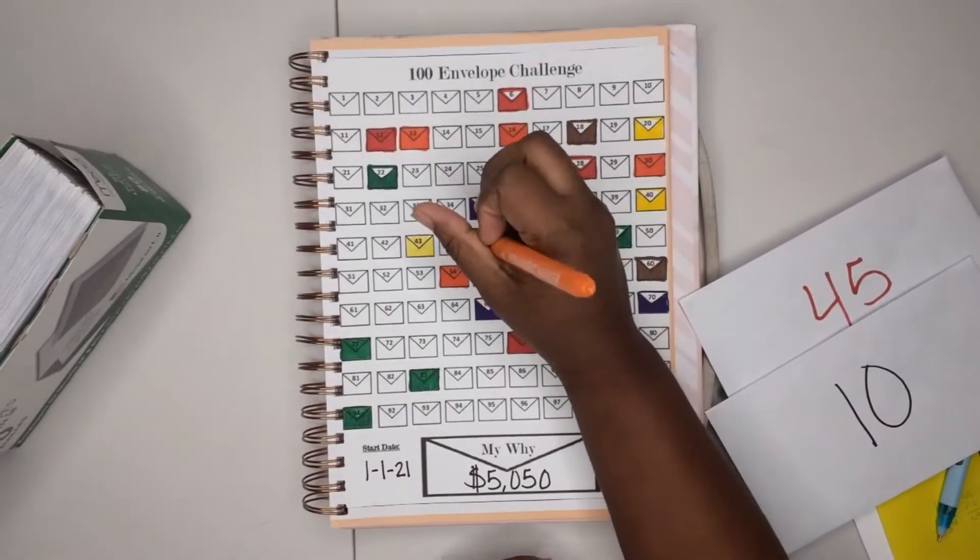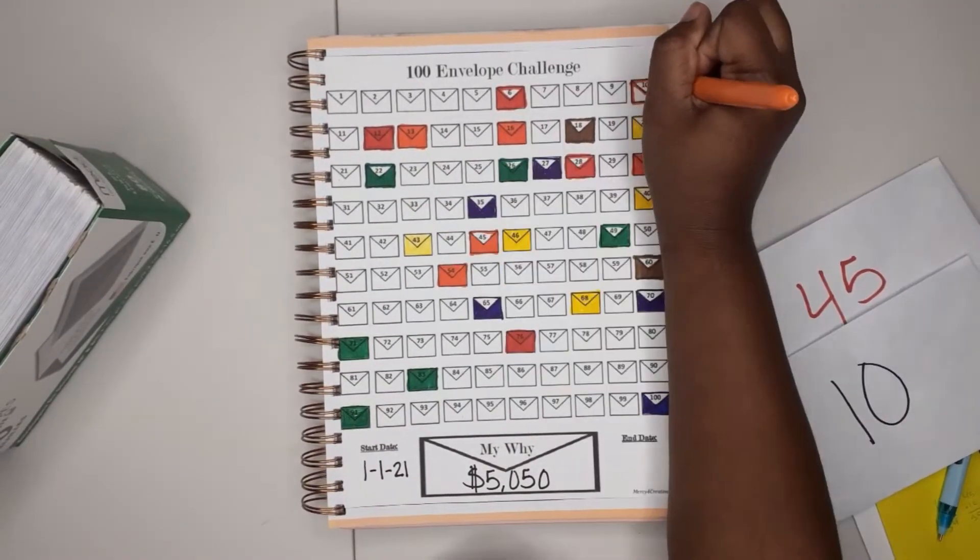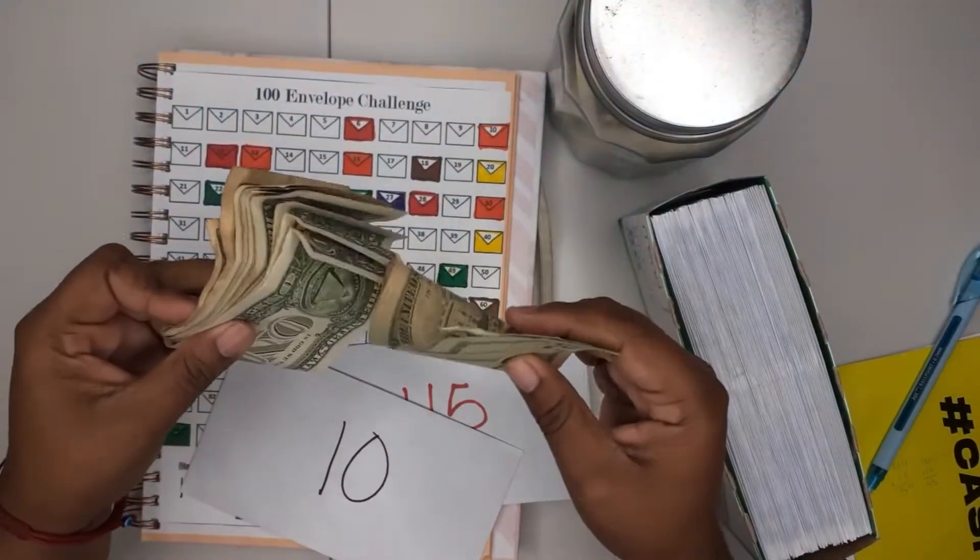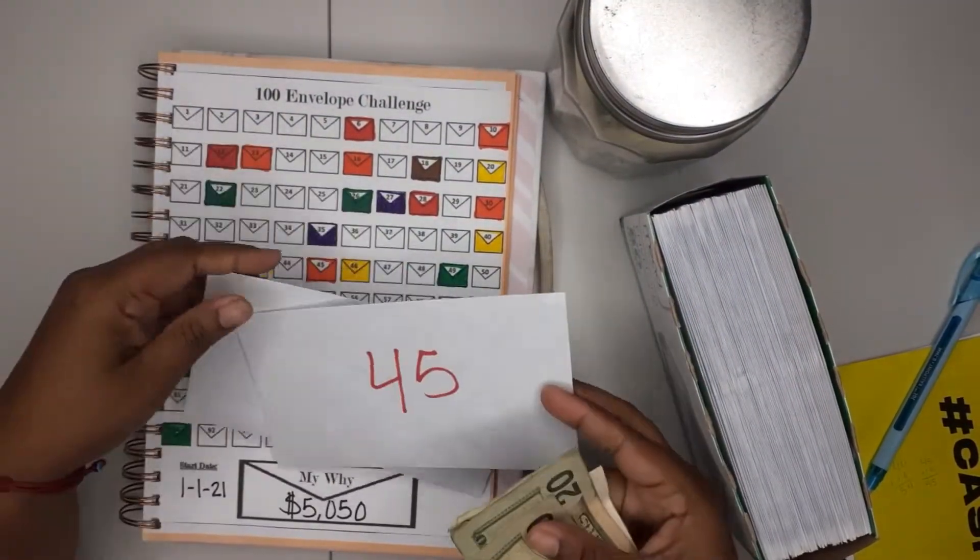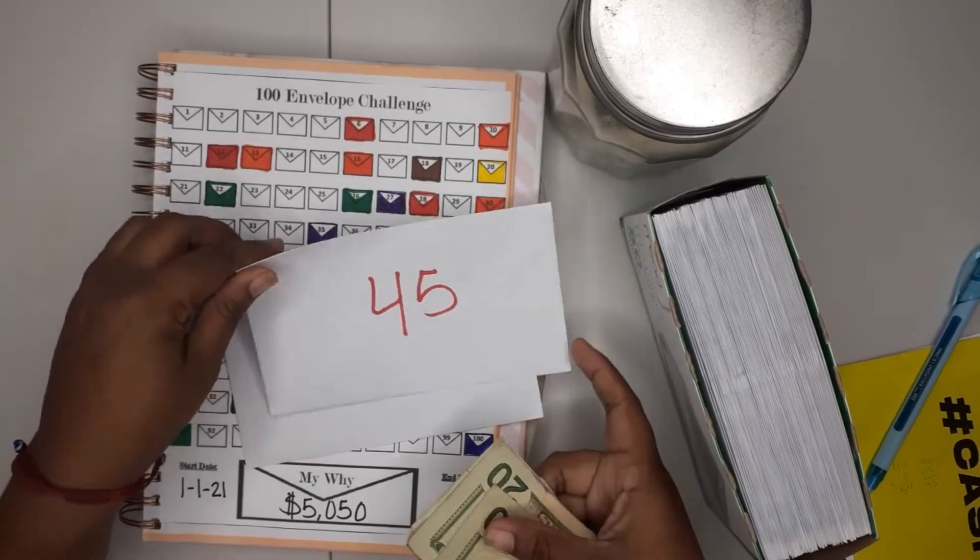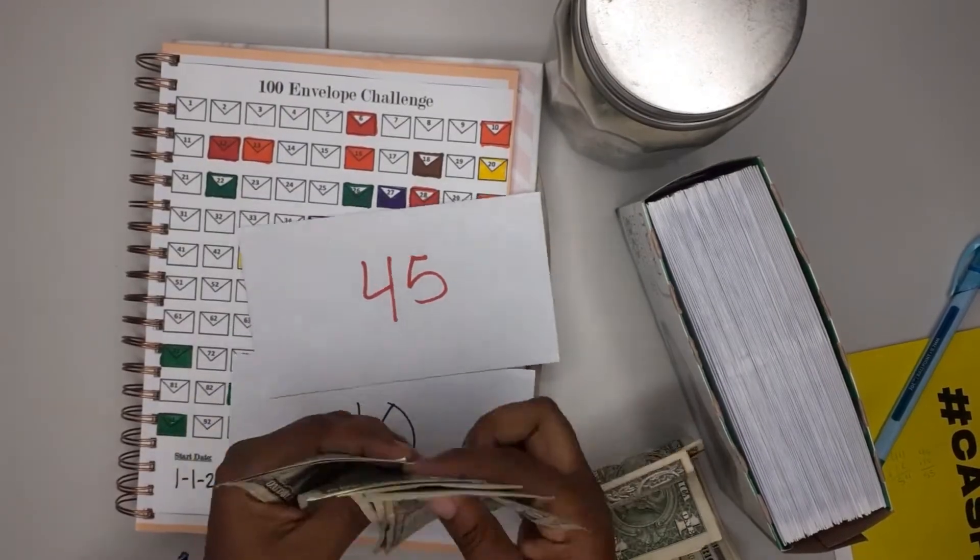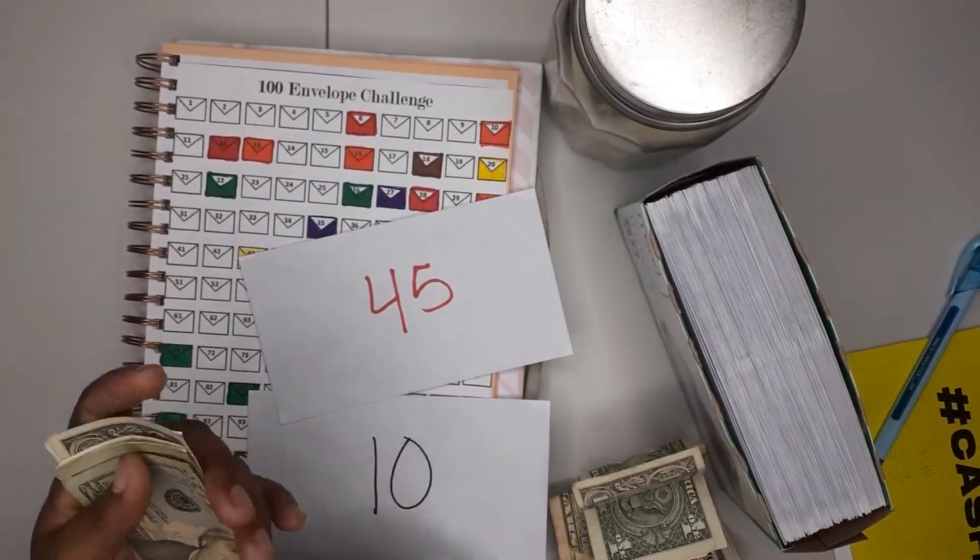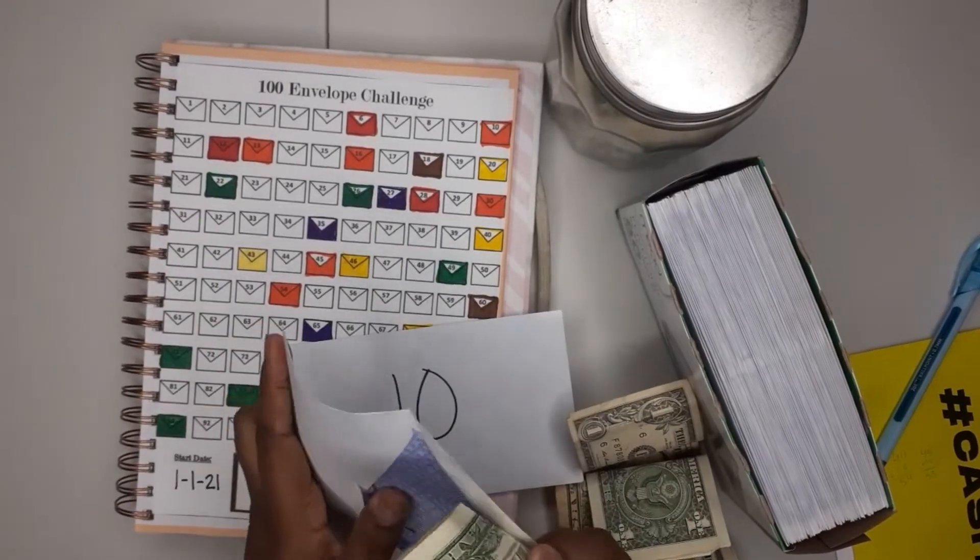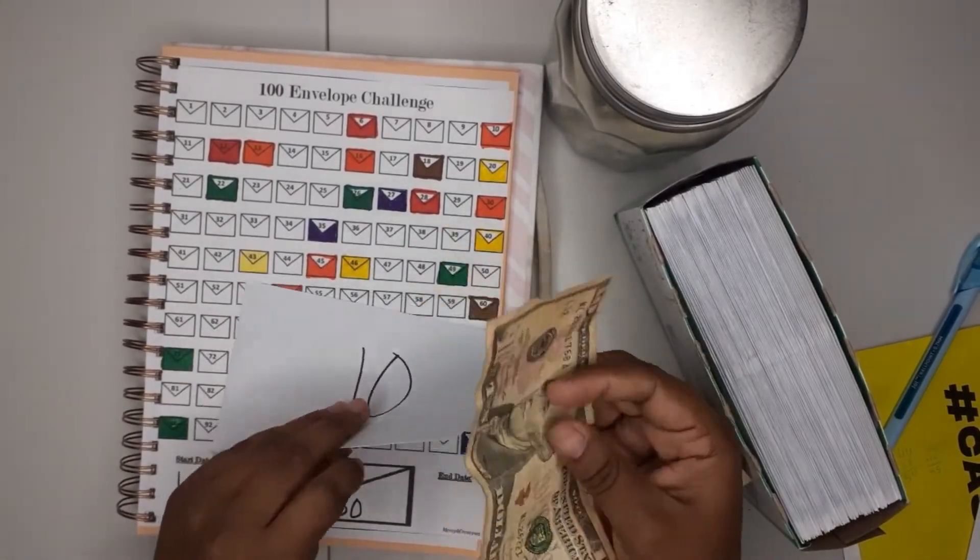So guys, now that we've got our change right here, we are gonna just put this money in these envelopes. 20, 40, 41, 42, 43, 44, and 45. So now we're gonna do 10. We just have a 10 right here.